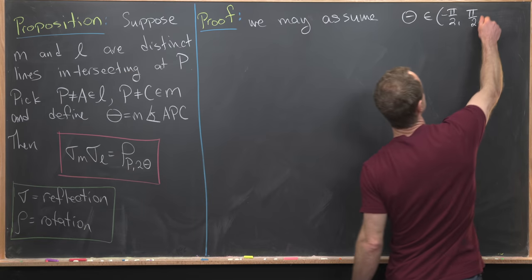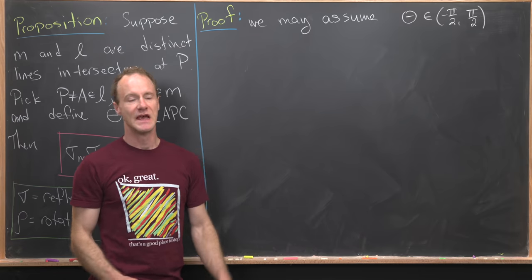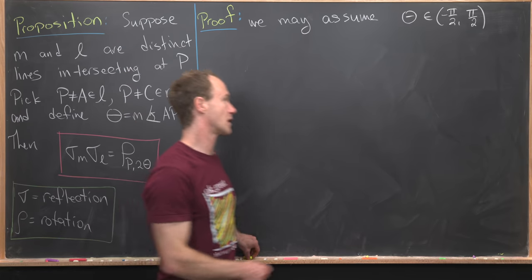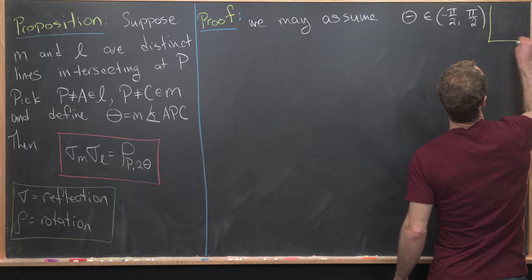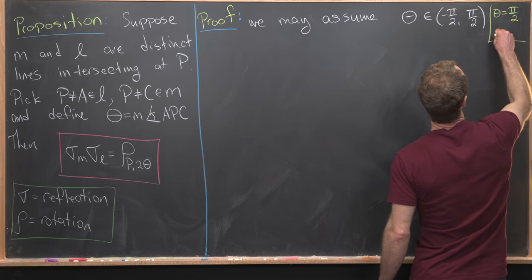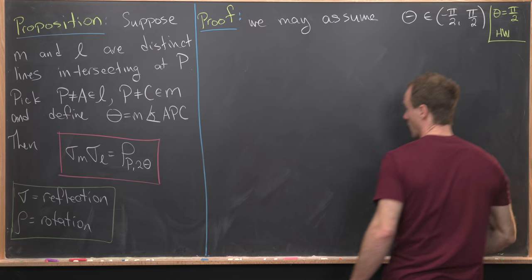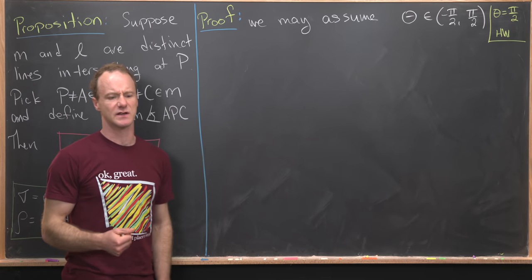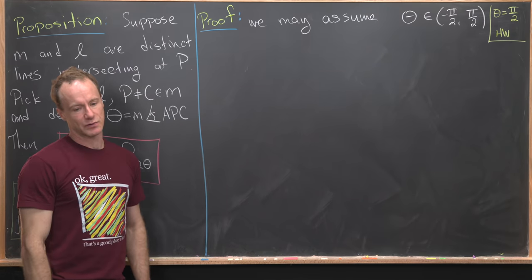For the purposes of this proof, I am also going to not include pi over two, and leave that part for homework. Theta equals pi over two, in other words 90 degrees, you guys can work that out on your own. I think it's fairly straightforward after seeing this proof.